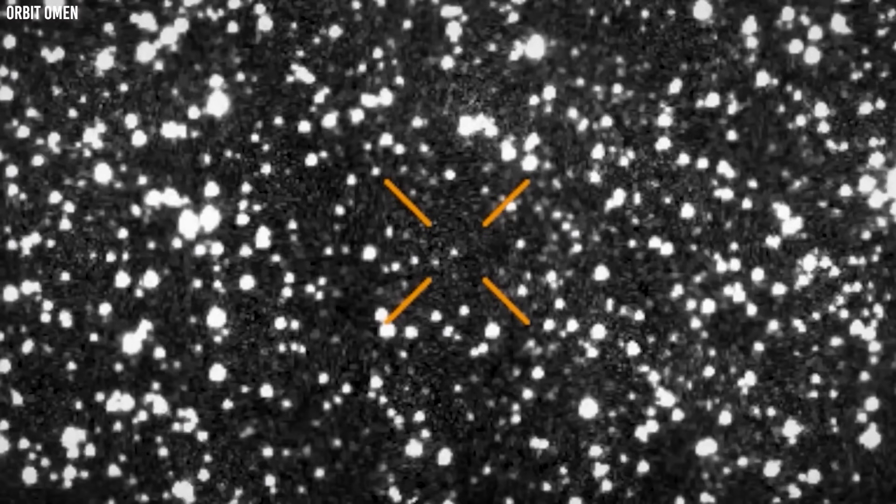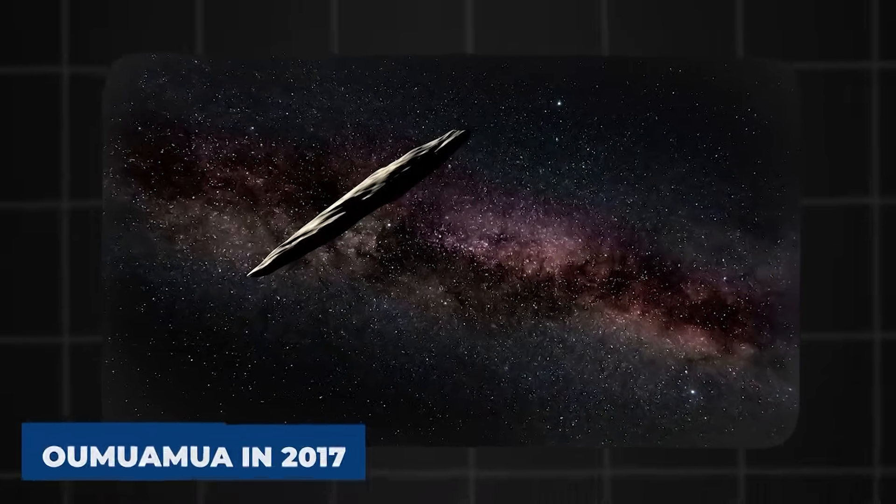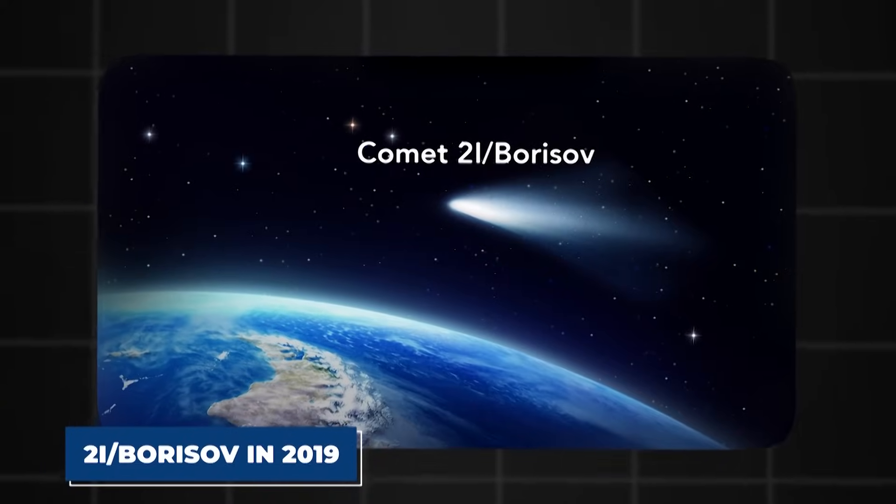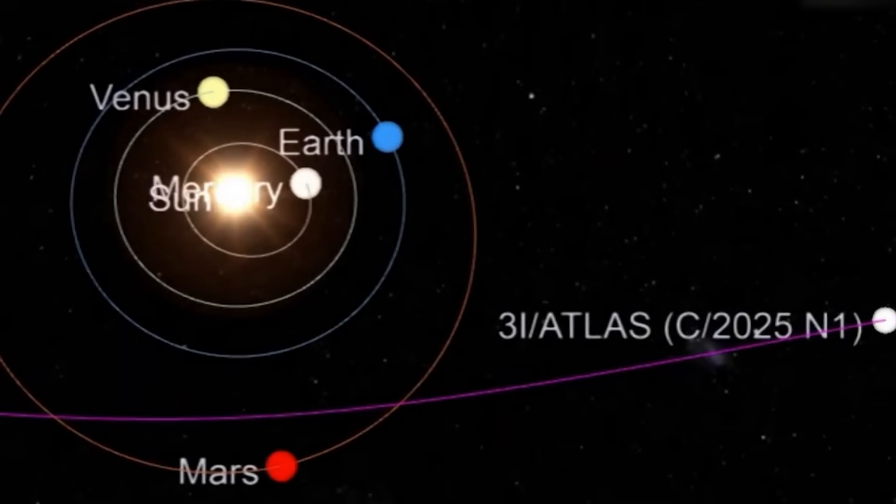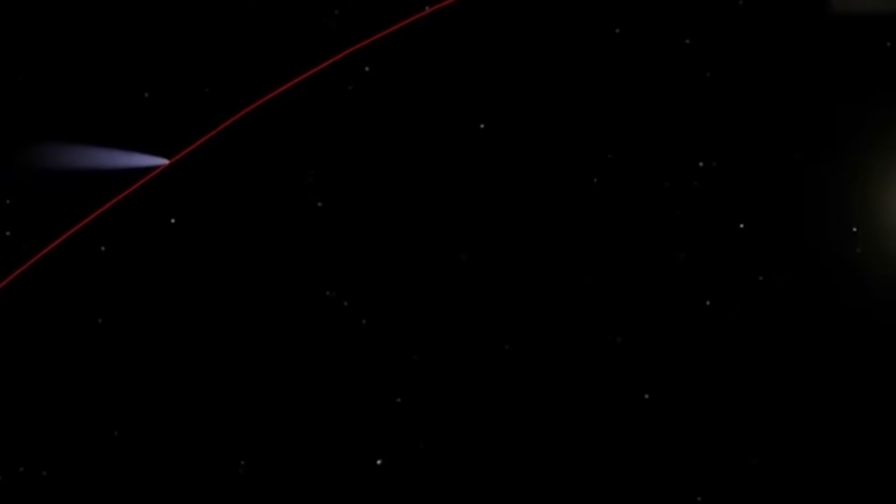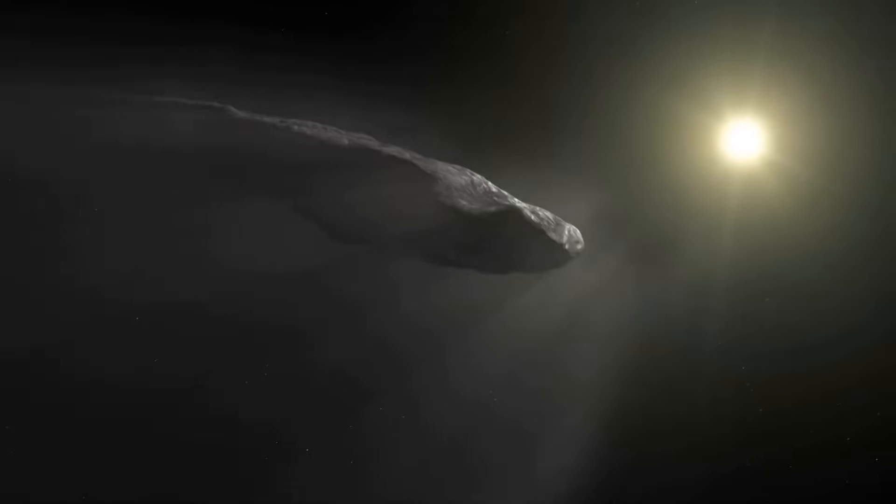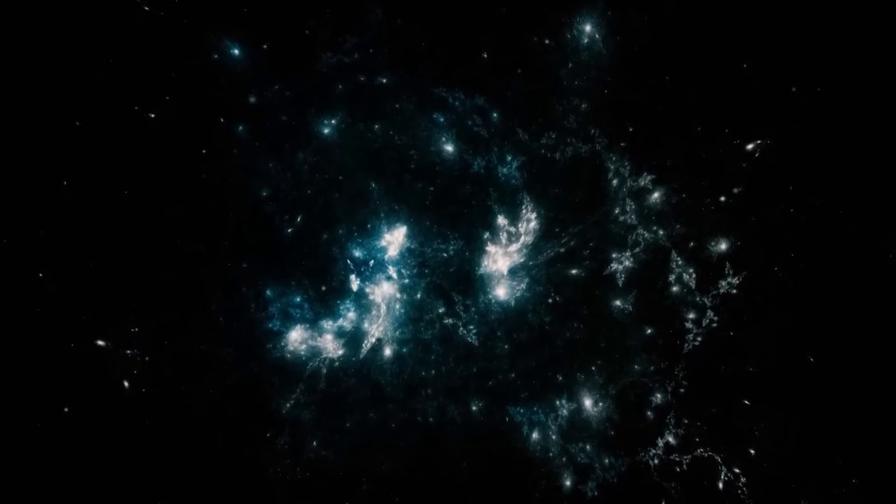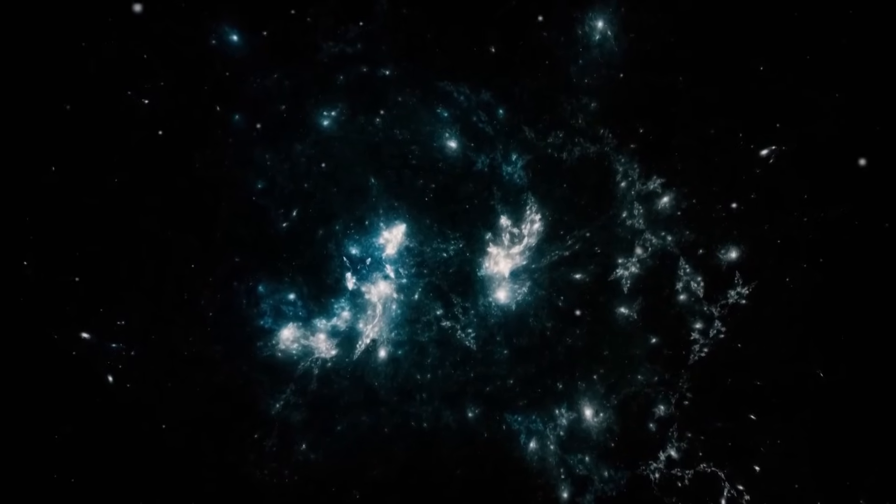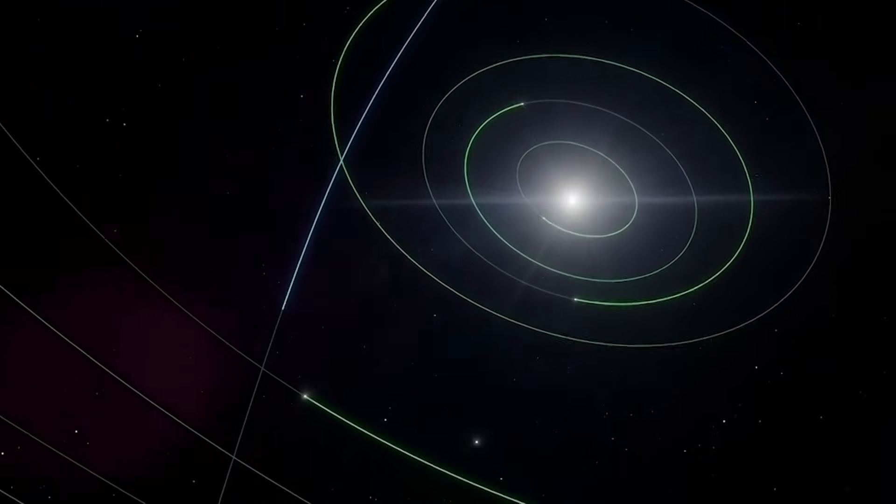The 3I in its name marks it as the third confirmed interstellar object ever discovered, following Oumuamua in 2017 and 2I-Borisov in 2019. Atlas refers to the survey telescope in Hawaii that first spotted it in 2024. Early calculations revealed a hyperbolic orbit, proof it wasn't gravitationally bound to our sun. In other words, this comet has been traveling for millions, perhaps billions of years through interstellar space before wandering into our backyard.